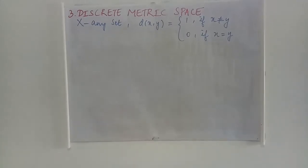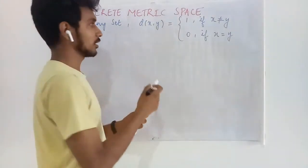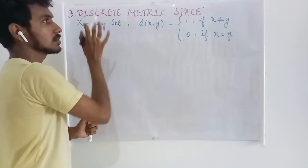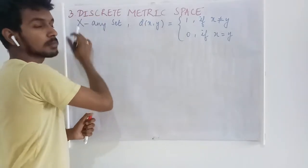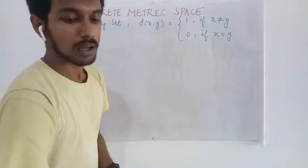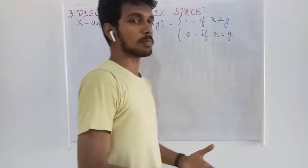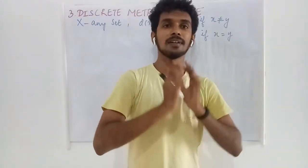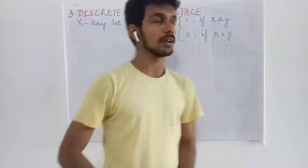The next example that we are going to see is a discrete metric space. After proving this is a metric on any set, we can say that with this metric, any set becomes a discrete metric space. In order to define a discrete metric space, we don't need a specific set. We must have any non-empty set; that is enough.